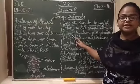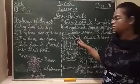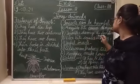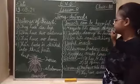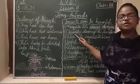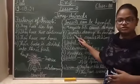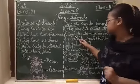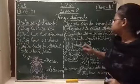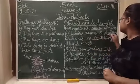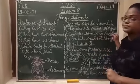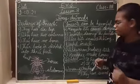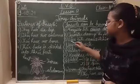Termites — termites means deema. Termites damage the furniture. Termites feed on wood — termites wood khaatay hain. That's why they damage the furniture which is made up of wood.